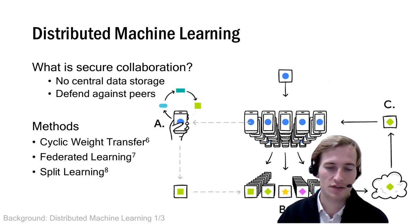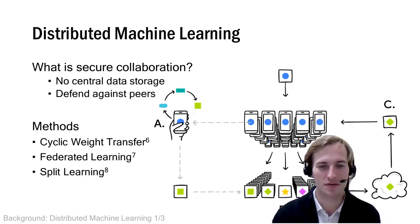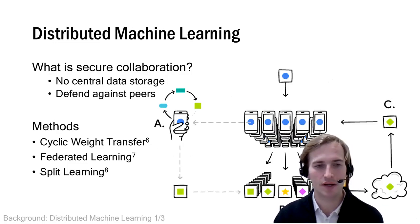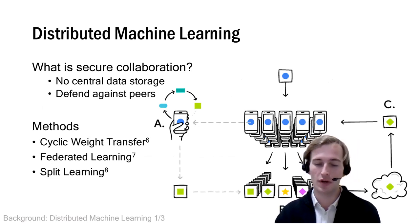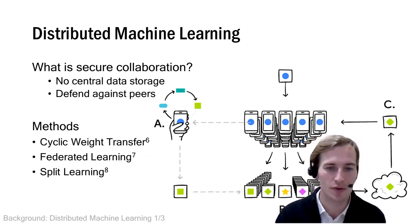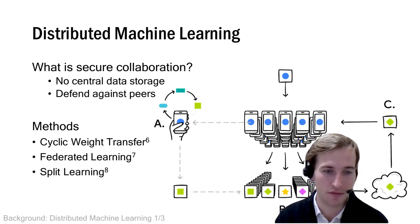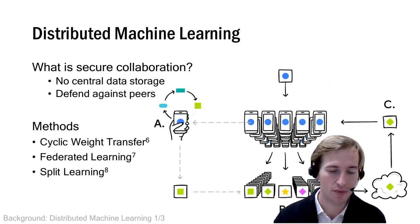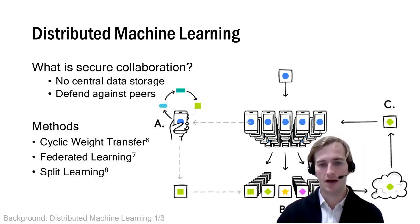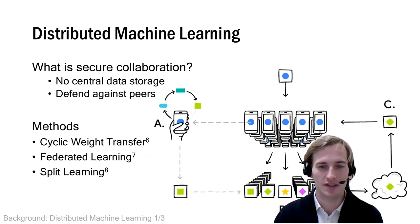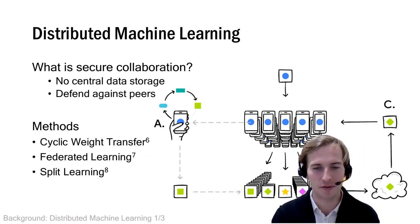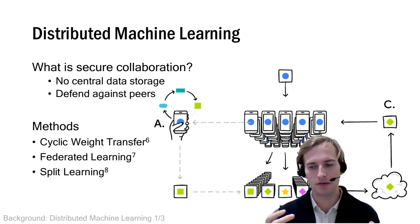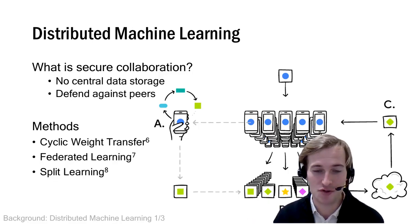So the solution we turn to is distributed machine learning — basically training not in one centralized location but distributedly. There are several methods: cyclic weight transfer, federated learning, and split learning. You can see an image of how Google explains federated learning, using the example of keyboard data from Gboard — sensitive data you don't want to share with the world.